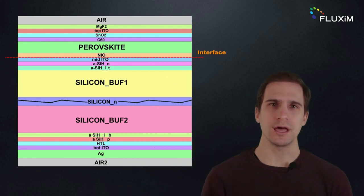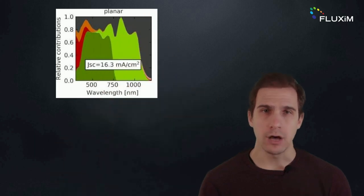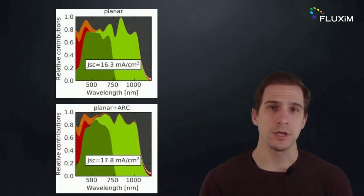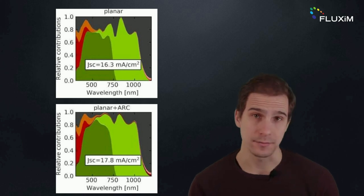From the simulated absorptance of the full stack, we can calculate the photocurrent of the devices. Starting from a planar device with no texture interfaces, the addition of anti-reflective coating improves the absorption of both the perovskite and silicon absorbers at wavelengths between 500 and 1000 nanometers.